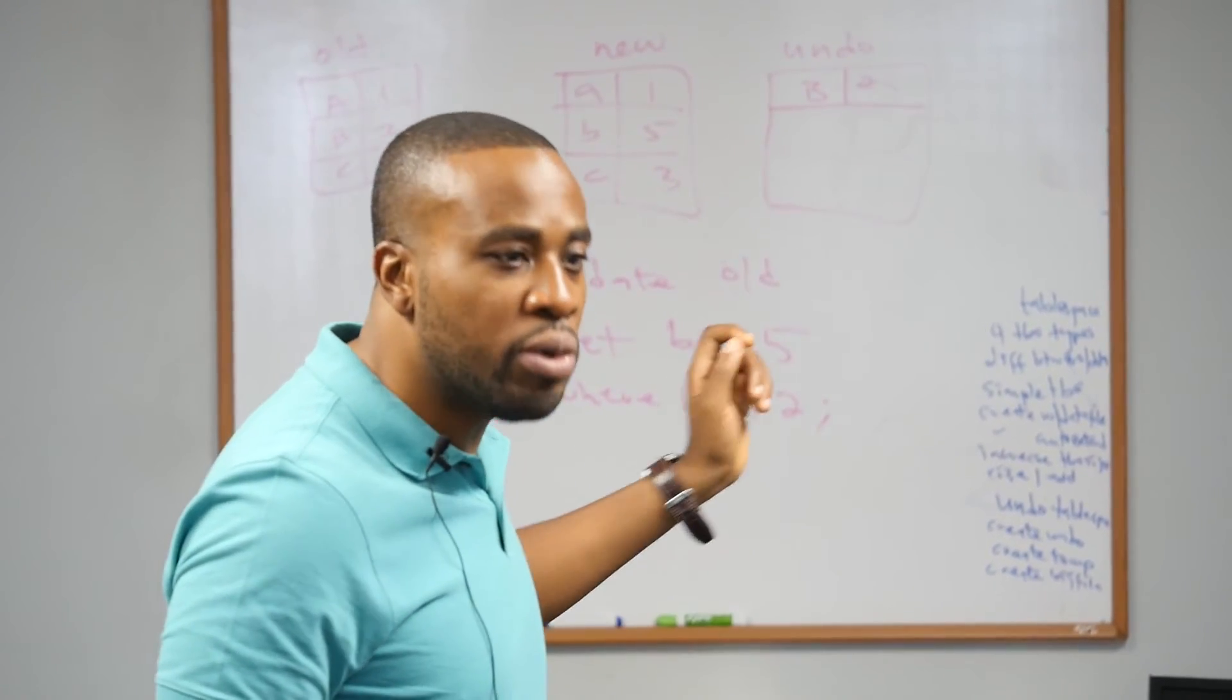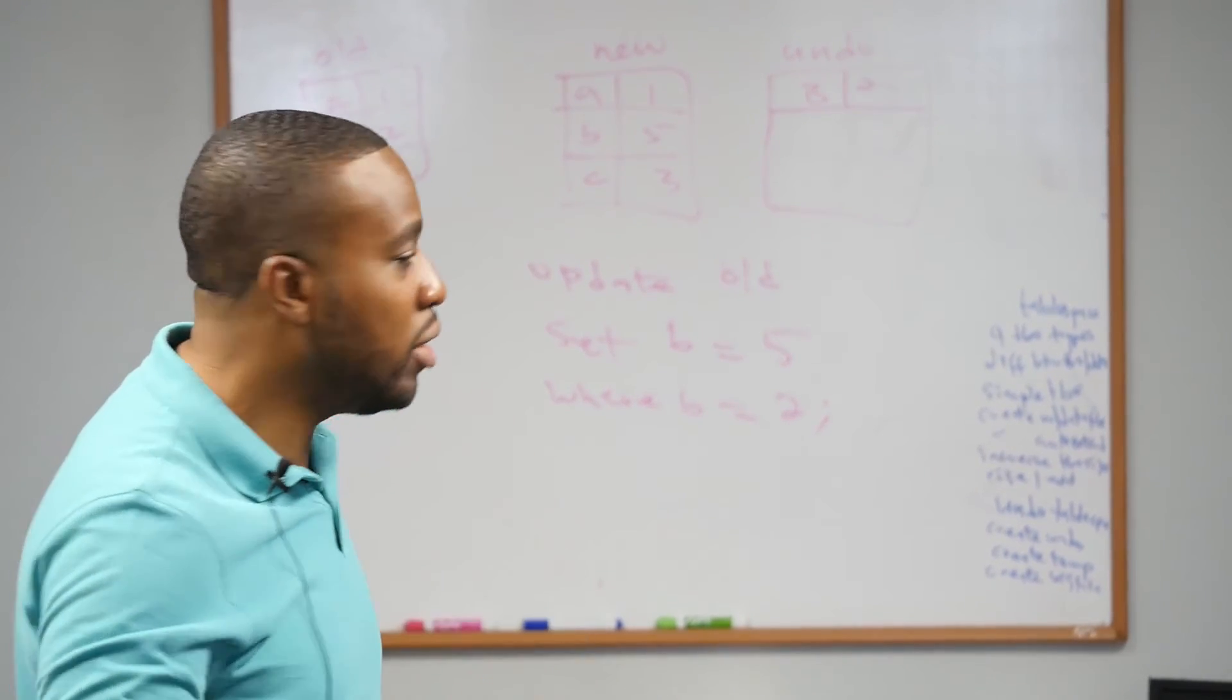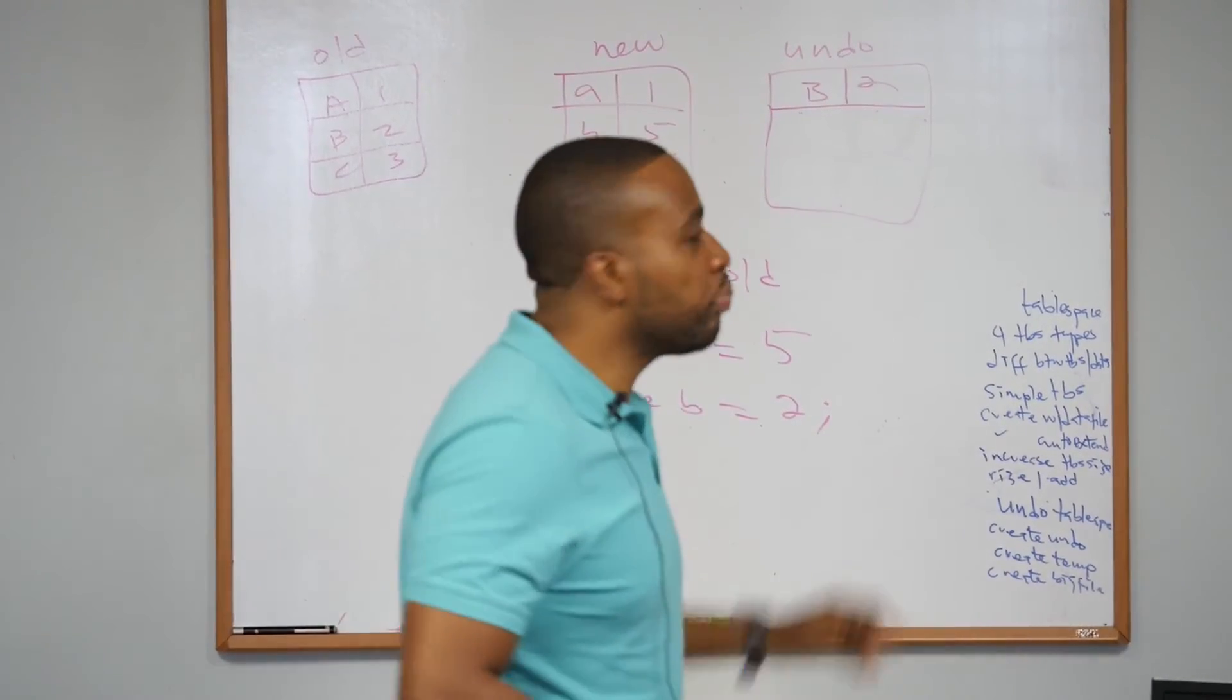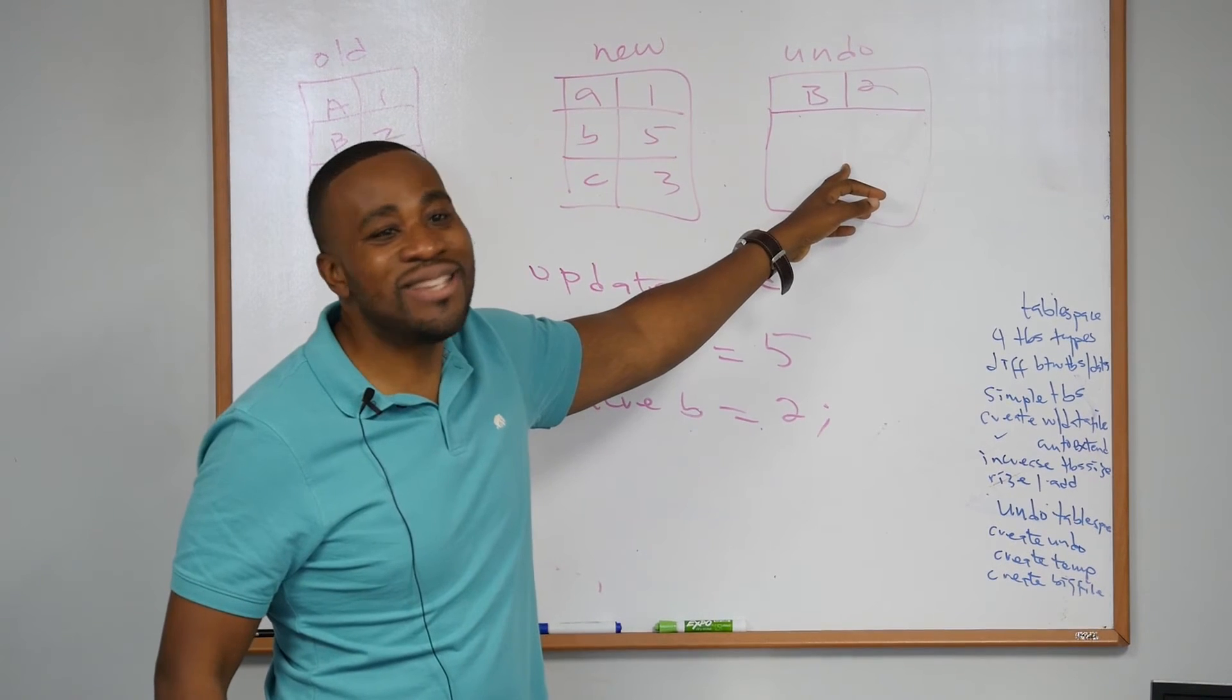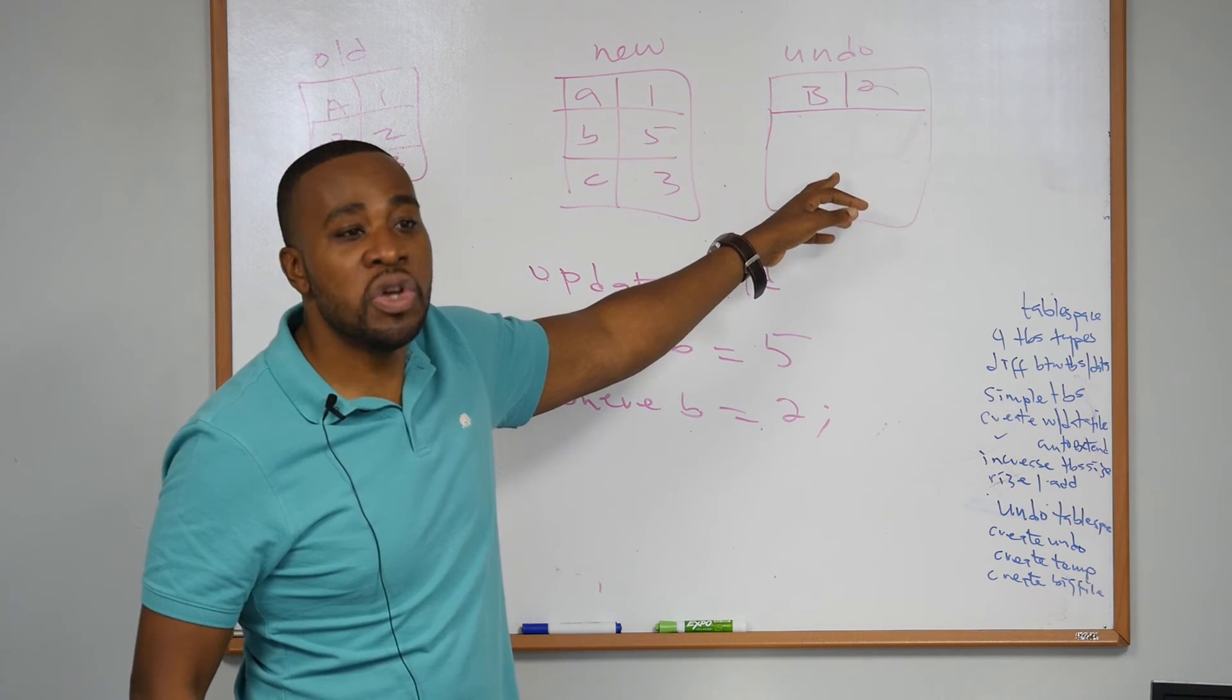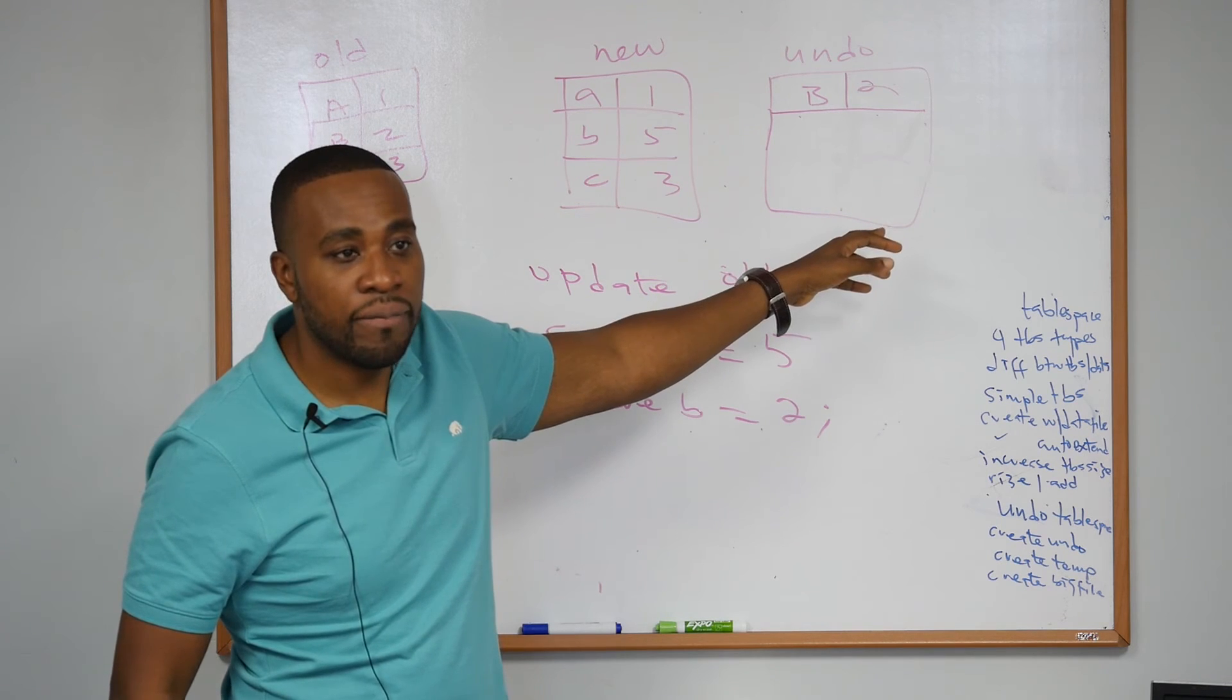commit, you can't roll it back. It's gone. This B2 vanishes. It's gone. Do you understand what I'm saying? You guys understand what the undo does? Very good.